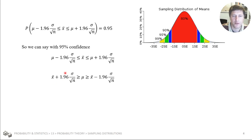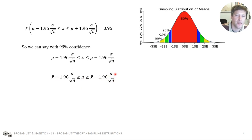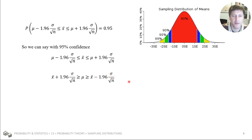We want a confidence interval for what the population mean actually is based on our measured sample mean. We're using the normal distribution and 95% confidence to get these 1.96 values, and sigma over root n is the standard deviation of our distribution for the mean x-bar. That's given us a confidence interval. But there's one problem: this is based on sigma — the standard deviation of the actual population — which we probably don't have. We have the non-biased standard deviation of our sample as our estimator, but not the true population value. This approach is great if you do have it, but if you don't, you have to do a little more work.